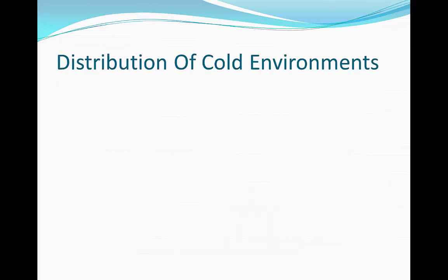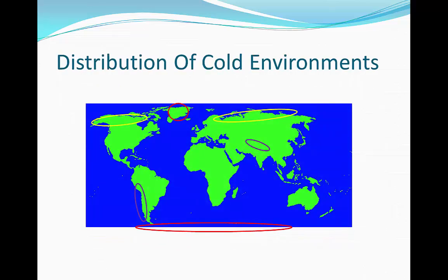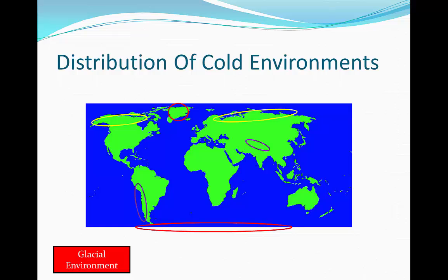What you can see now is a global map showing where cold environments are located. The red rings indicate glacial environments. Antarctica isn't shown on this map, but where it should be right in the south pole, I have shown where it would probably be with a red circle. Also, Greenland, which is up north in the Arctic Circle, is also a typical example of a glacial environment.